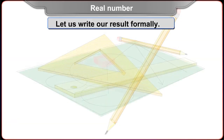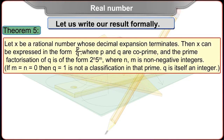Let us write our result formally. Theorem 5: Let x be a rational number whose decimal expansion terminates. Then x can be expressed in the form P upon Q, where P and Q are co-prime, and the prime factorization of Q is of the form 2 raised to n into 5 raised to m, where n, m are non-negative integers. If m is equal to n is equal to 0, then Q is equal to 1, and x is itself an integer.